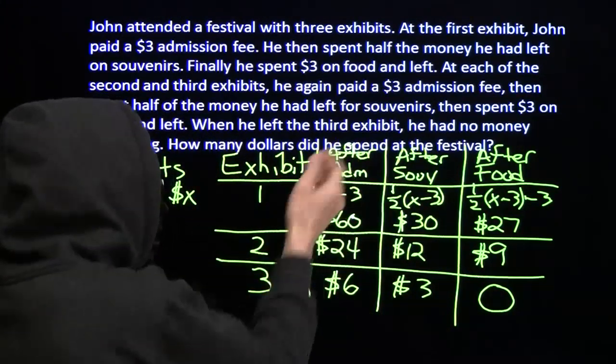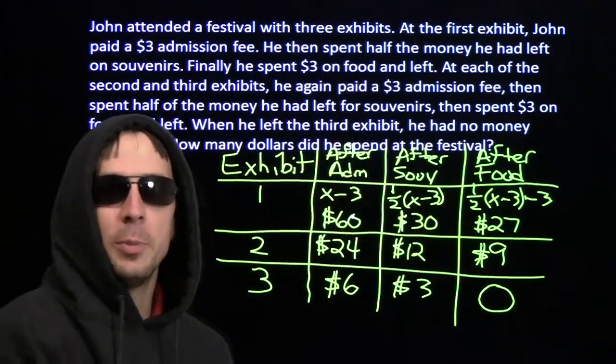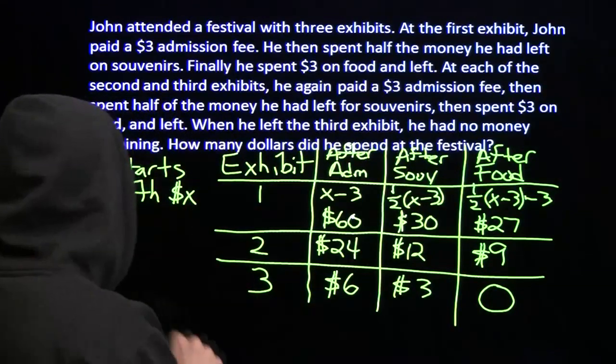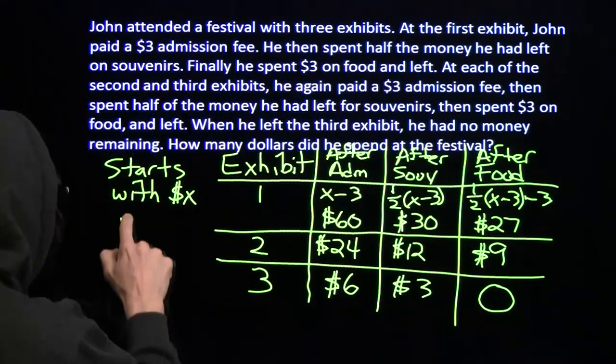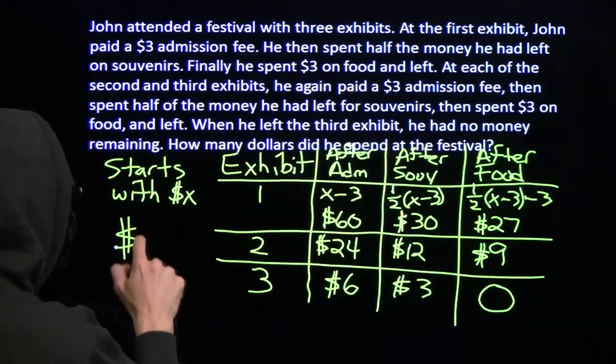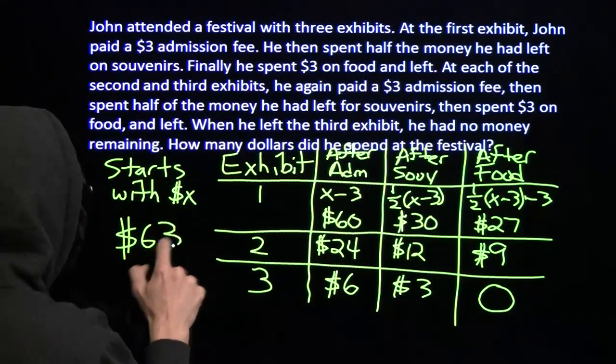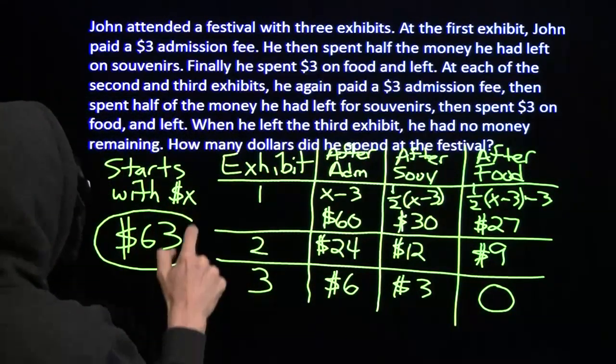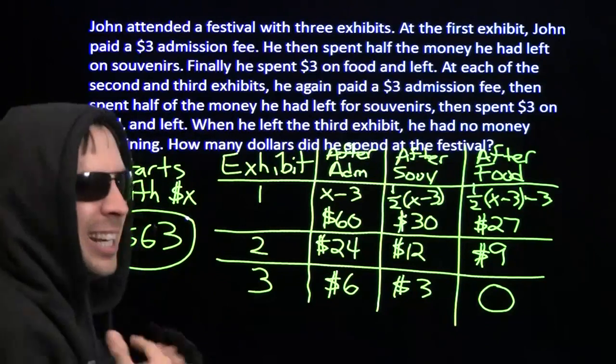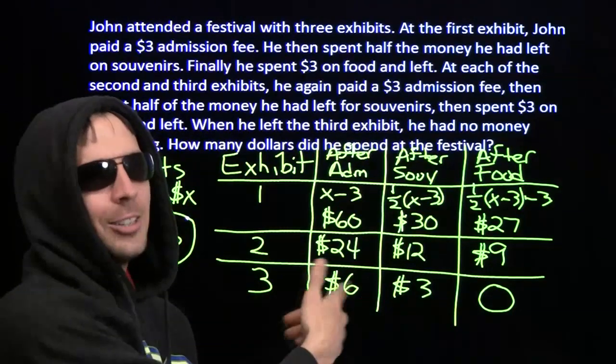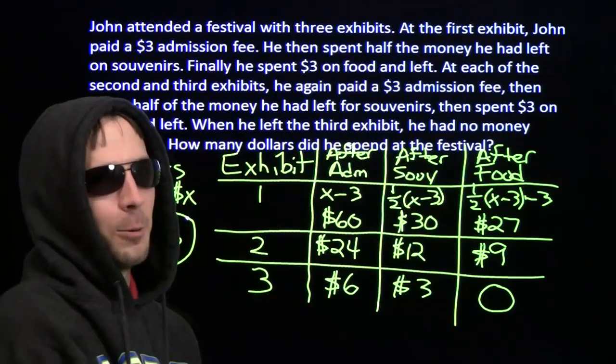He had sixty dollars after spending three bucks on admissions — so we know he started with sixty-three dollars. I like doing things backwards.